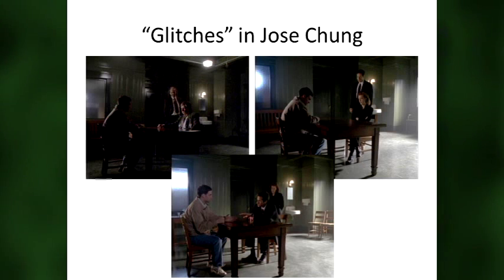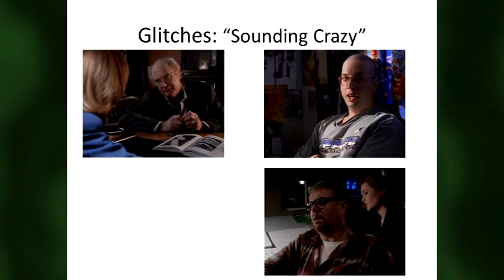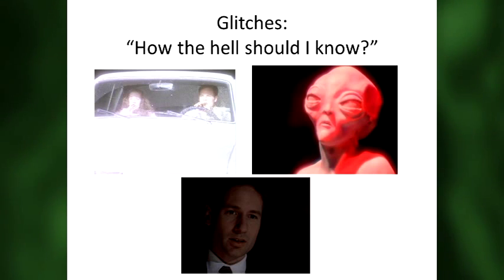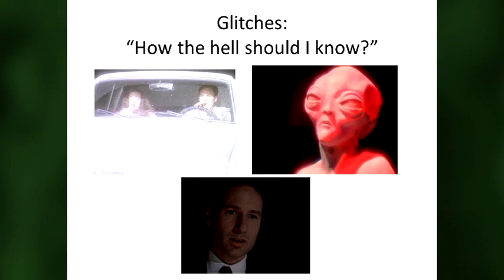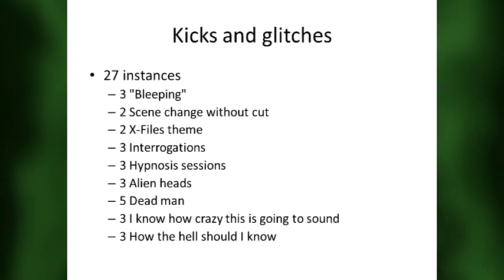Jose Chung has a lot of this: three interrogation scenes with similar lines and similar staging, three hypnosis scenes with similar lines and staging, three instances where a shadow of an alien head enters the frame. Chung, Rocky, and Blaine each say 'I know how crazy this is going to sound.' A dead man comes up five different times. Three instances of 'how the hell should I know.' In total, there are some 27 instances of kicks or glitches in Jose Chung, for an average of once every two minutes.